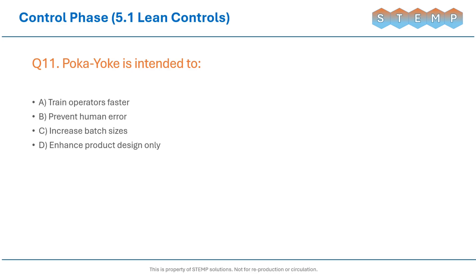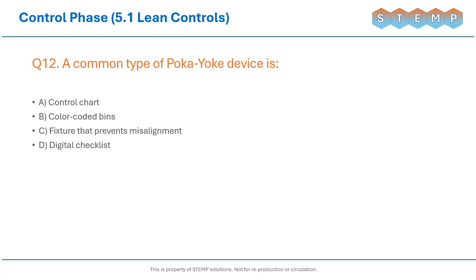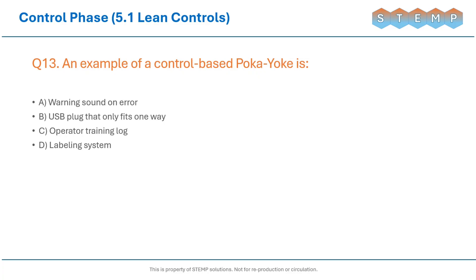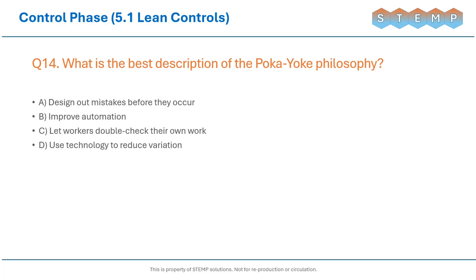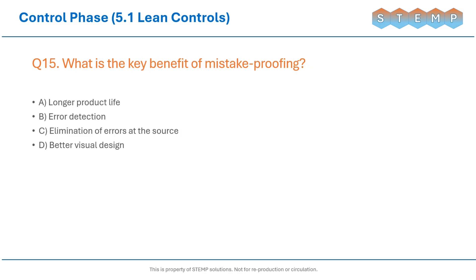Poka-yoke is intended to? A common type of Poka-yoke device is? An example of a control-based Poka-yoke is? What is the best description of Poka-yoke philosophy? What is the key benefit of Mistake Proofing?